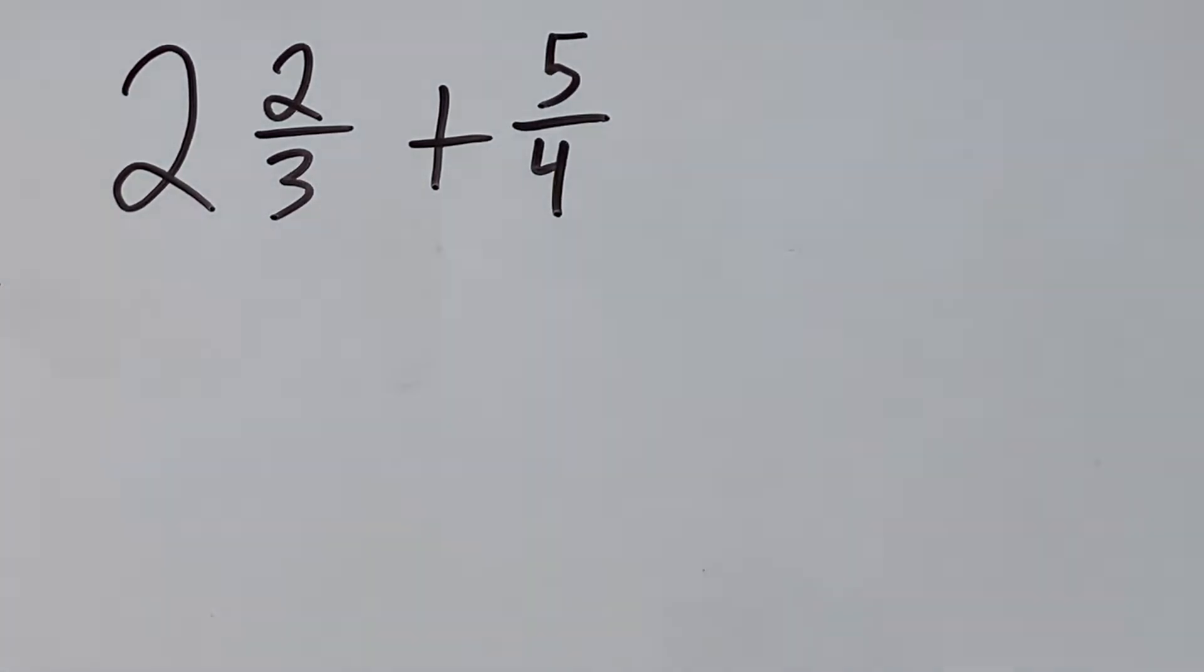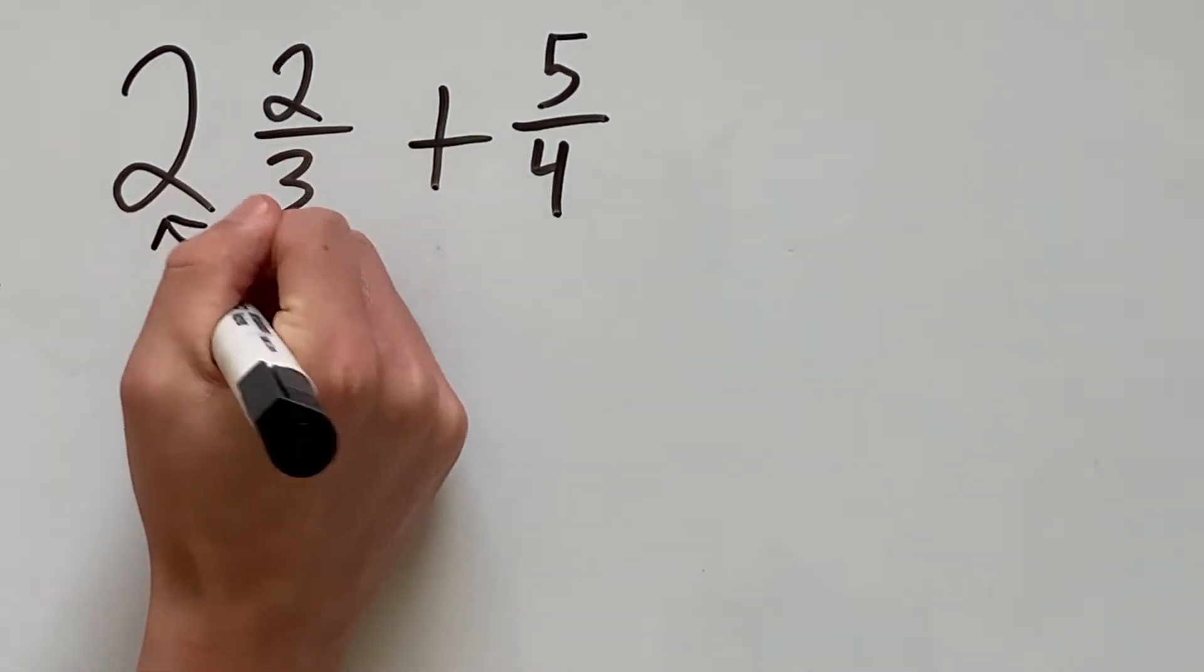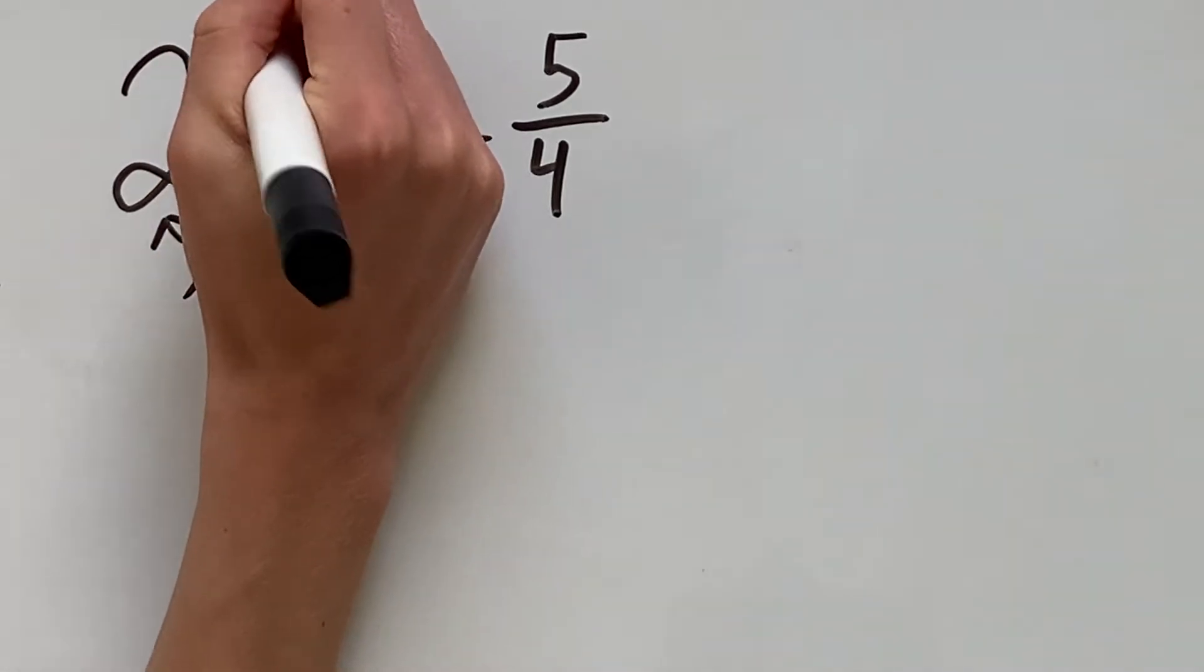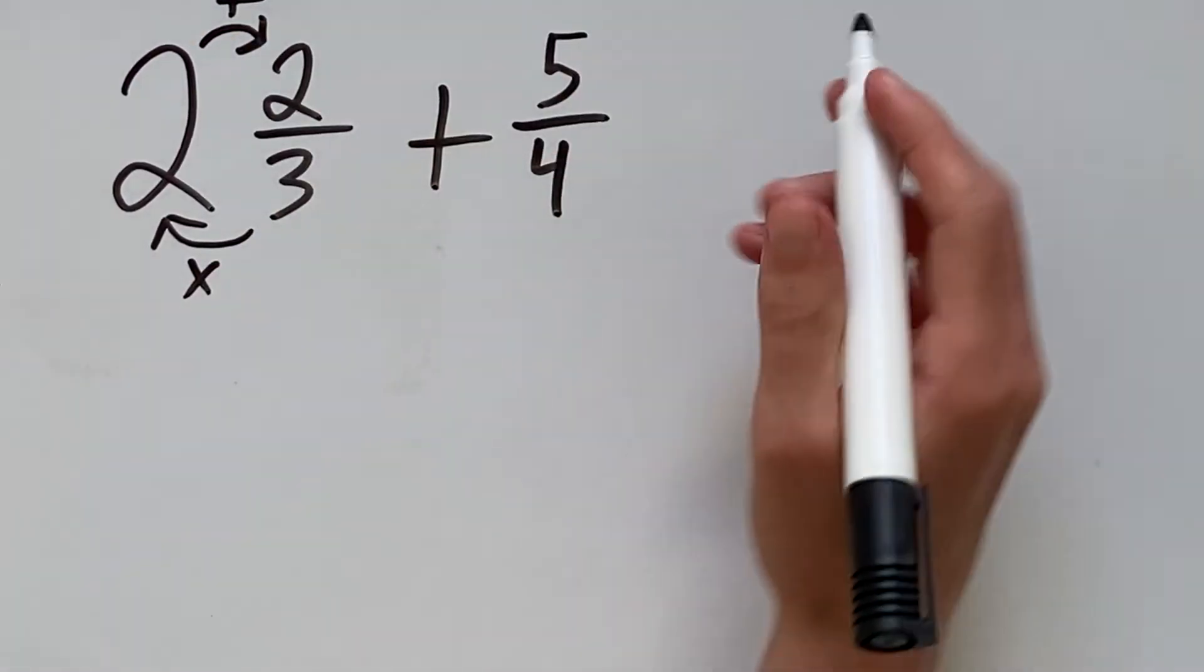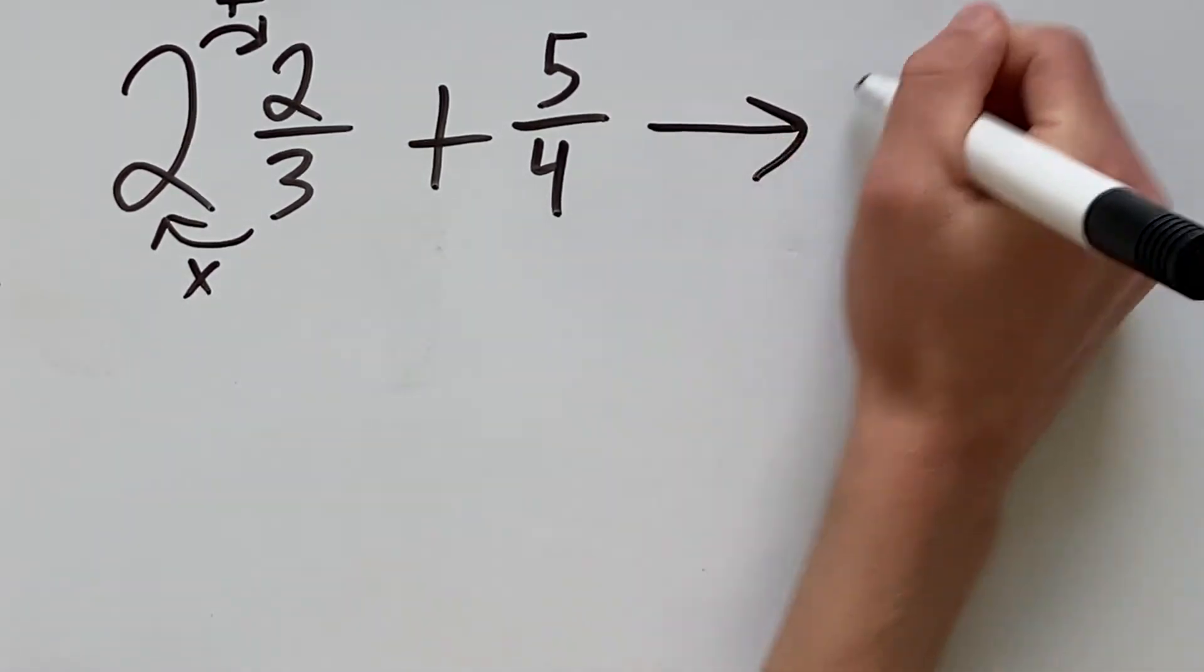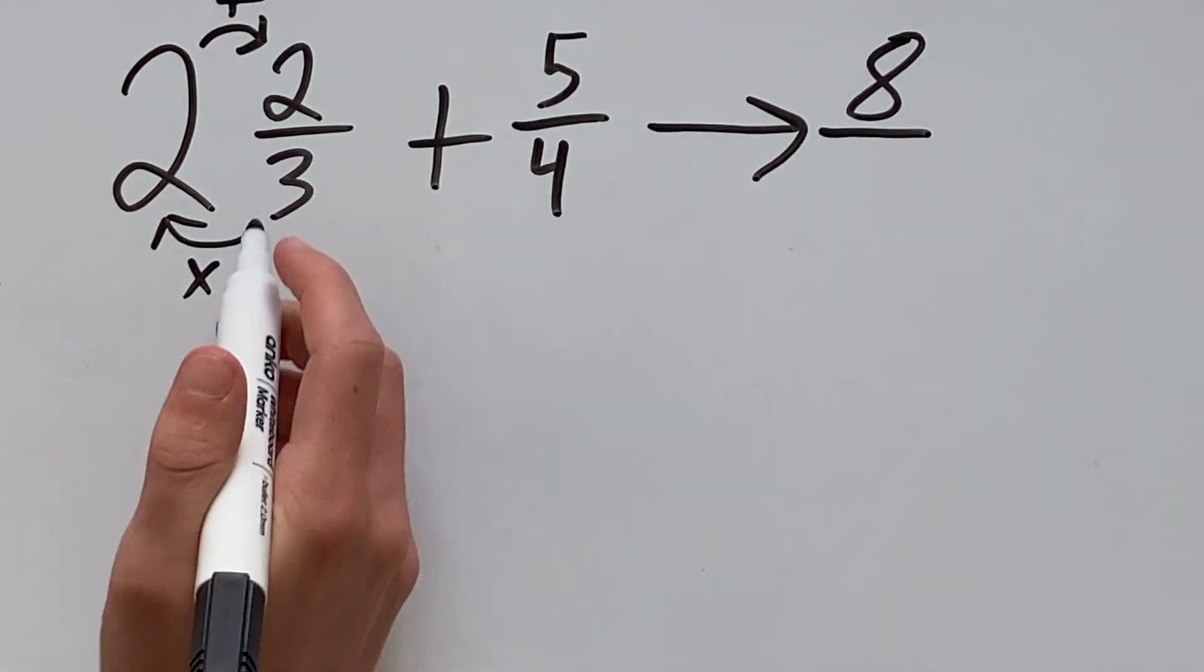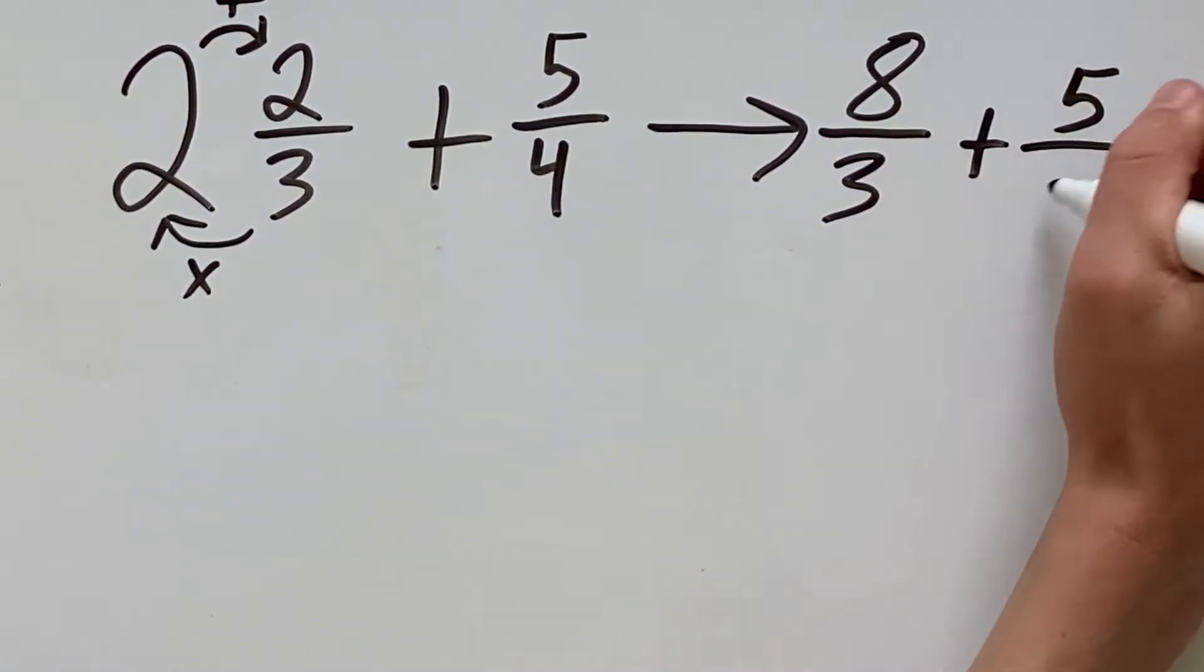To do that, we multiply the denominator of the mixed number by the whole number in the front and then add that to the numerator. That will give us 3 times 2 which is 6 plus 2 which is 8. So that goes to 8 over and our denominator will stay as 3 plus 5 over 4.